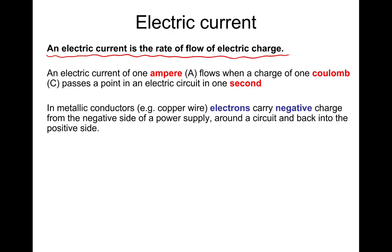So this might not make as much sense until you see the equation. An electric current of one ampere, or one amp, flows when a charge of one coulomb passes a point in an electric circuit in one second. So if you had two coulombs of charge, which is what charge is measured in, passing a point in one second, there will be a current of two amps. If it was three coulombs per second, three amps.